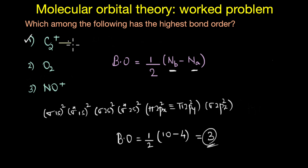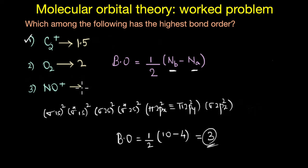So to conclude: C2+ has a bond order of 1.5, O2 has a bond order of 2, and NO+ has a bond order of 3. Therefore, NO+ has the highest bond order among the three.